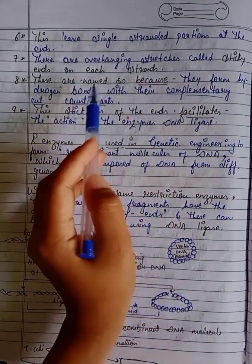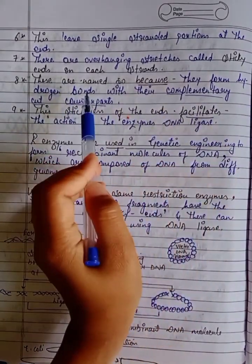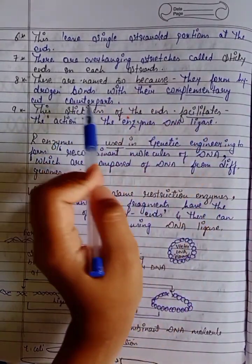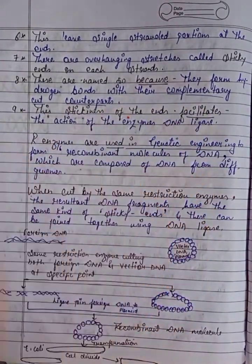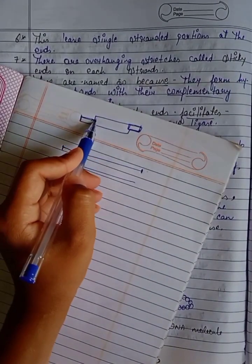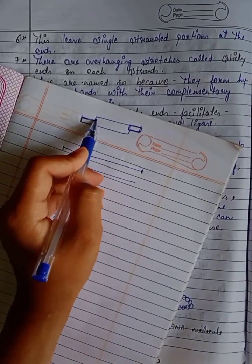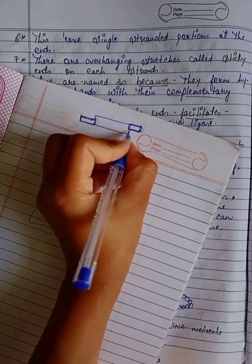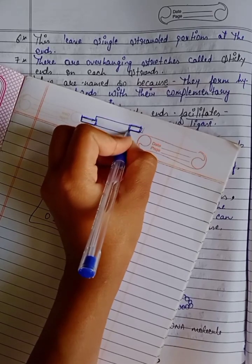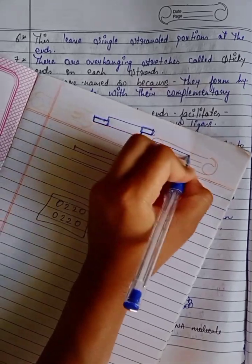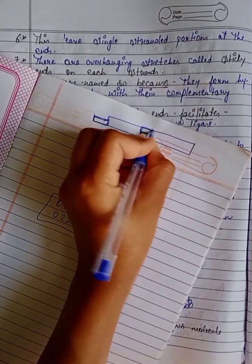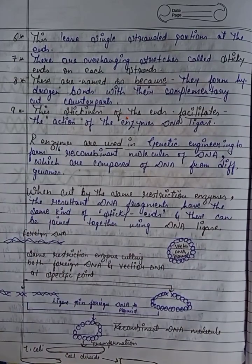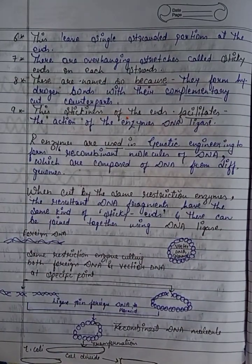These are named sticky ends because they form hydrogen bonds with their complementary cut counterparts. So what sticky ends do is form hydrogen bonds with each other, allowing complementary sequences to join together.